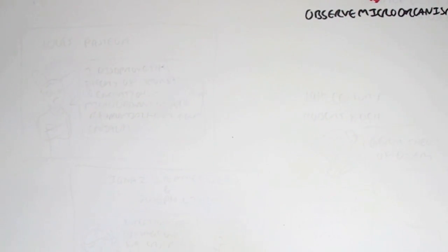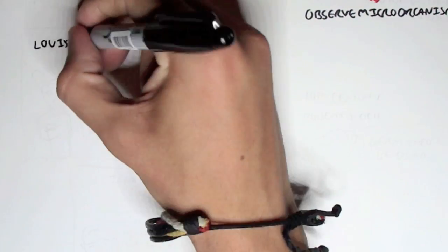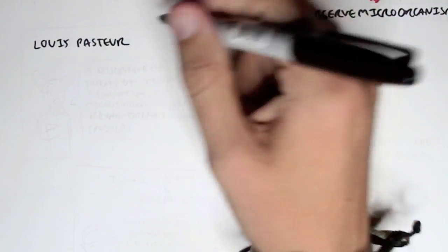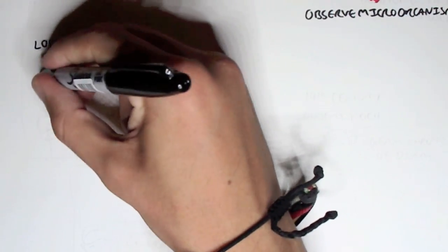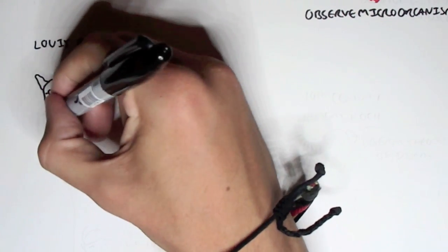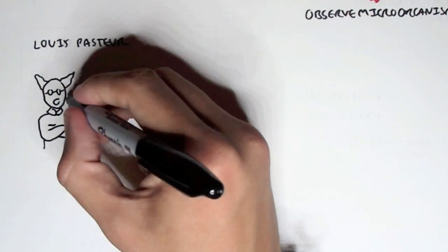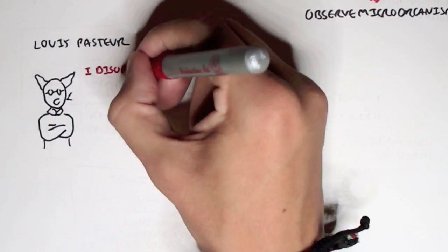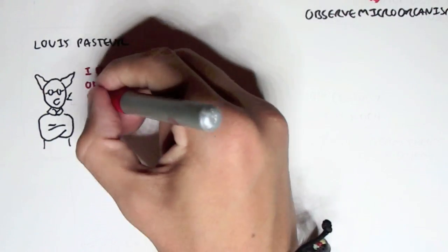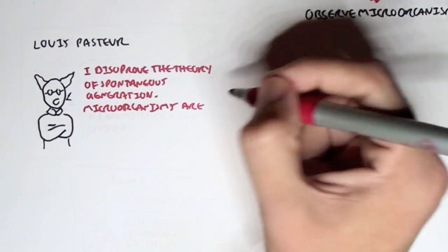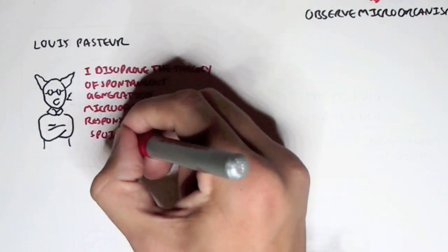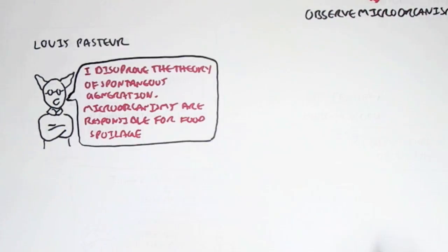Now, let's learn about some people who are important in the field of microbiology. The first guy is by the name of Louis Pasteur, who disproved the theory of spontaneous generation. What is spontaneous generation? Well, it's the thought that organisms arise from essentially non-living things, such as dust, for example. And he also said that microorganisms are responsible for food spoilage.